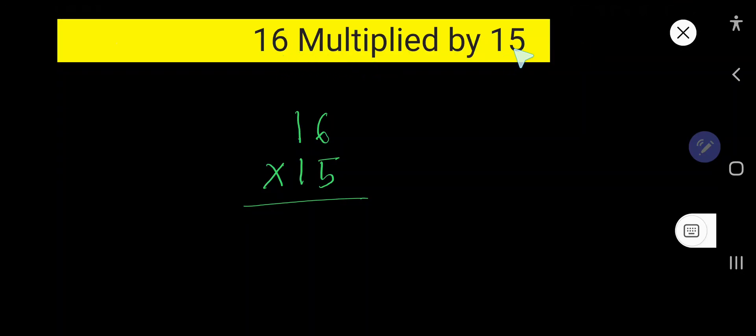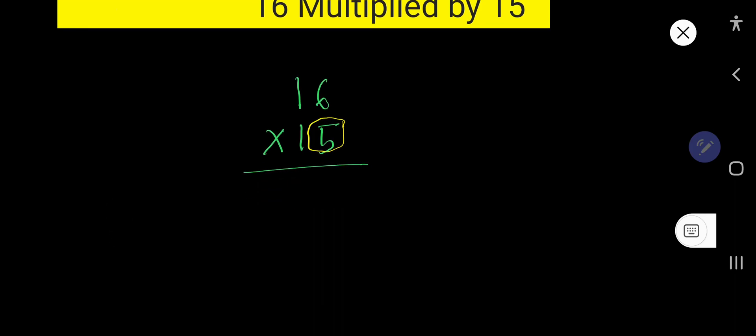16 multiplied by 15. We need to multiply 16 by 15, so let's start with 5. 5 times 6 equals what? If you forget the multiplication table, here is the way to find out the multiplication table of 5.